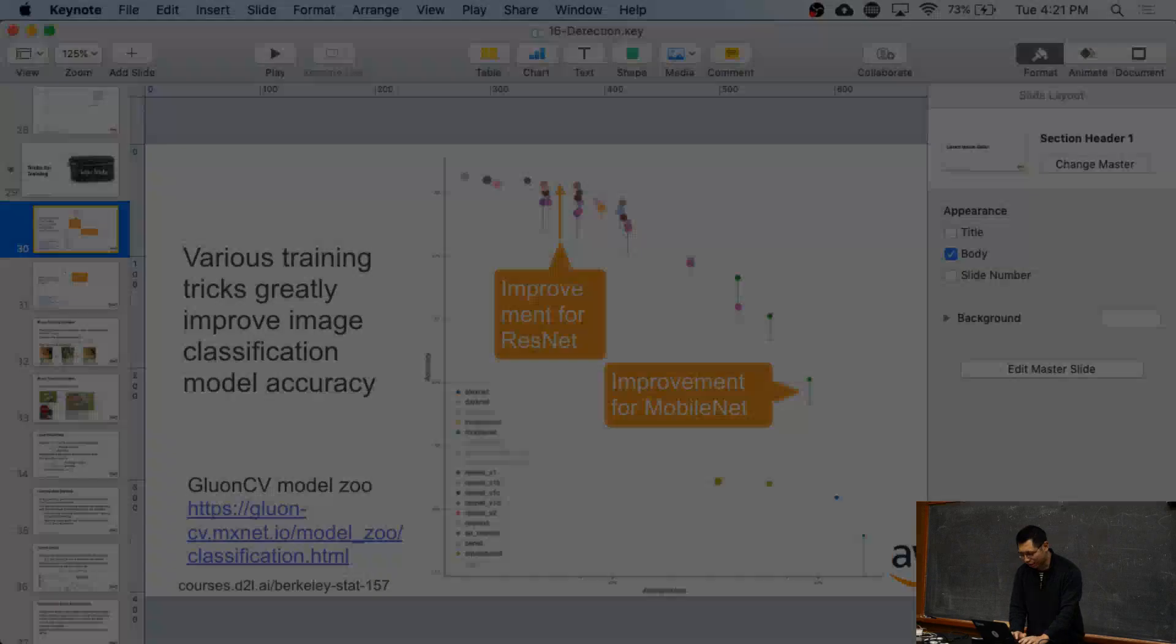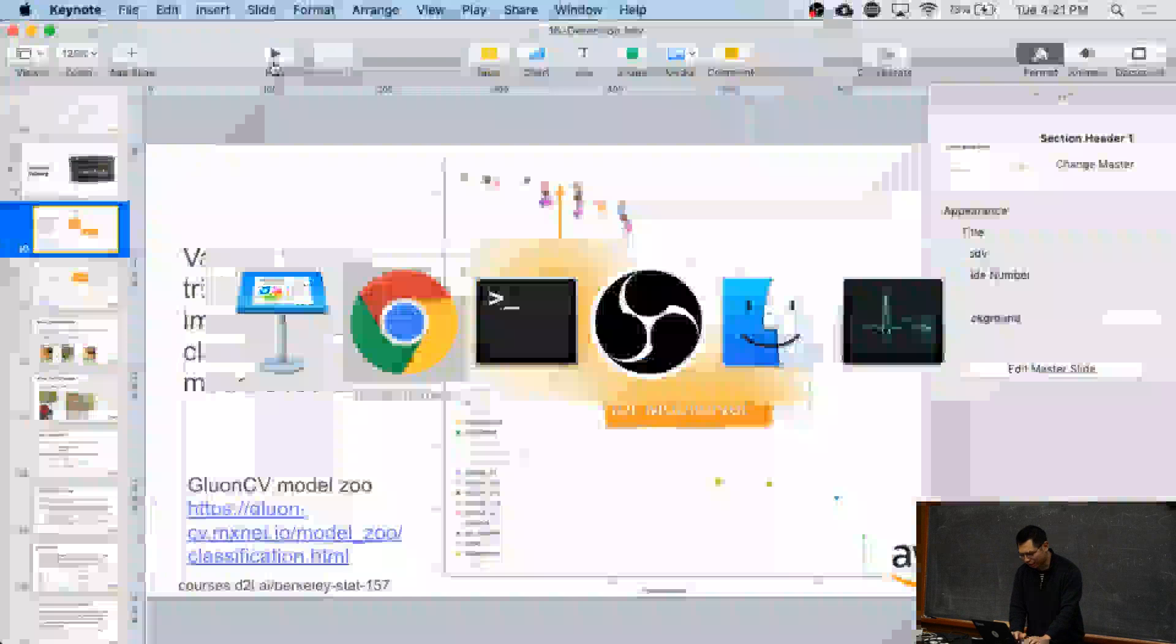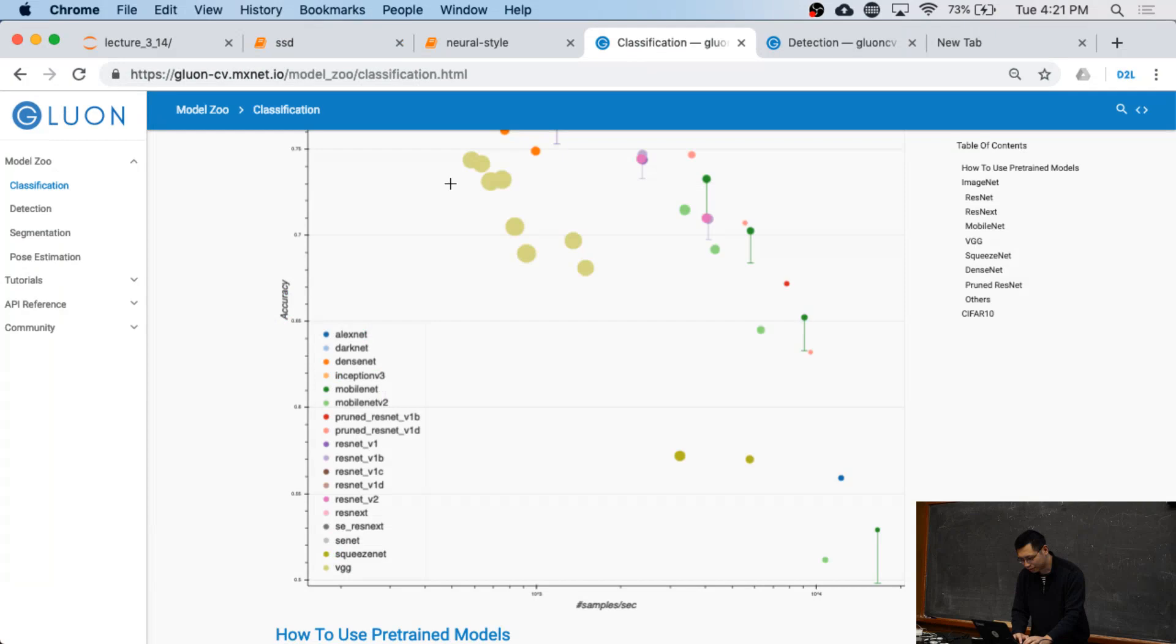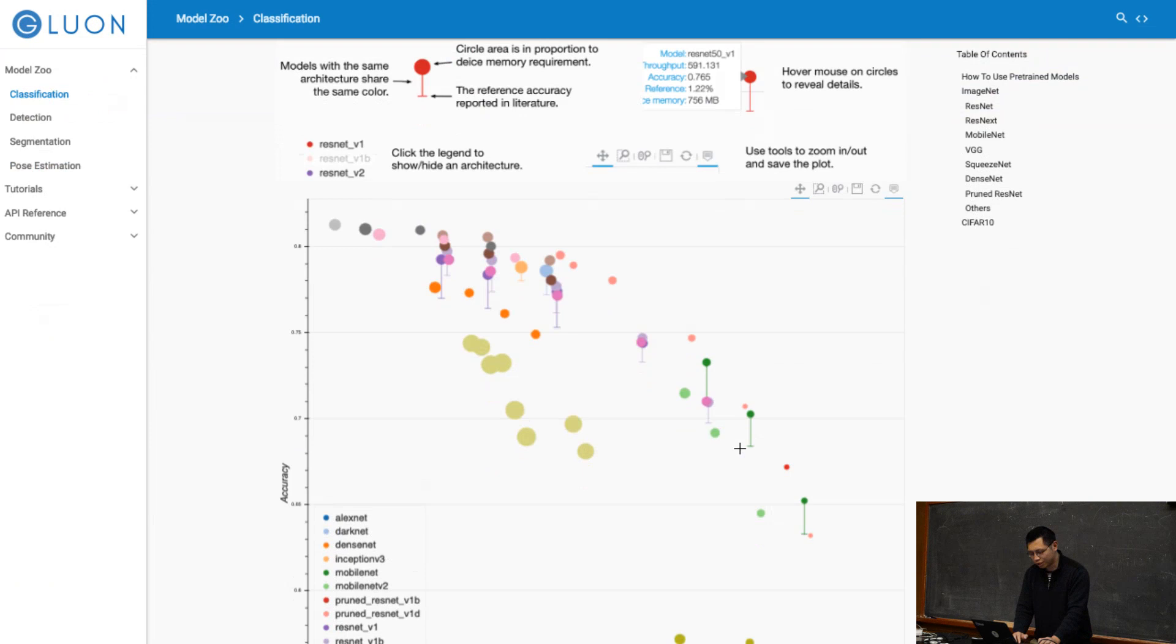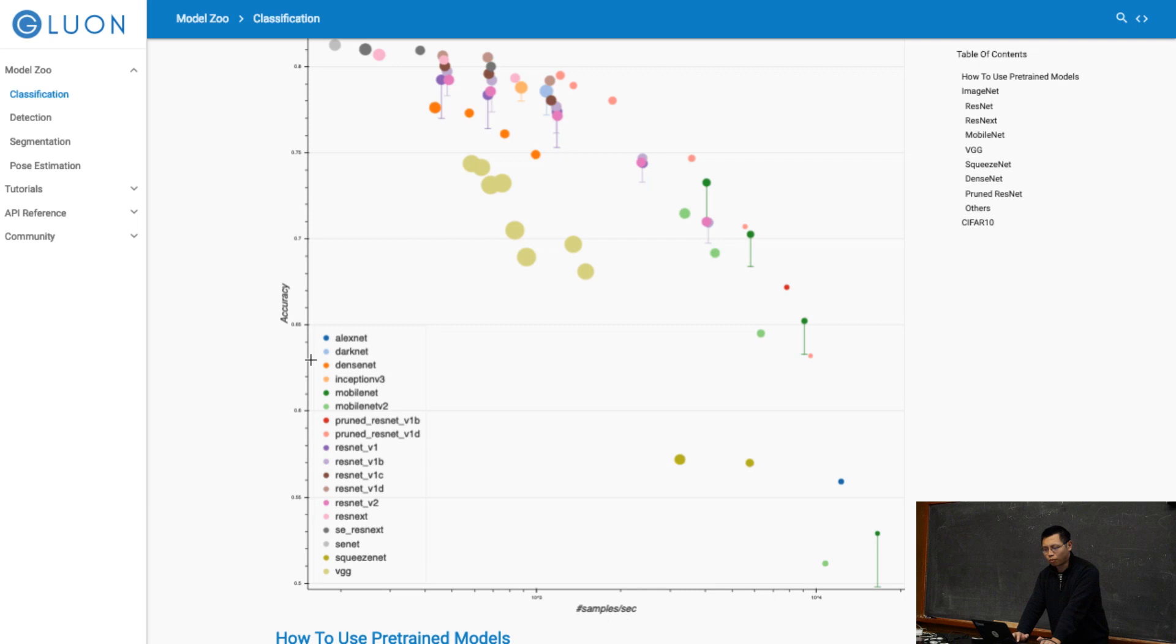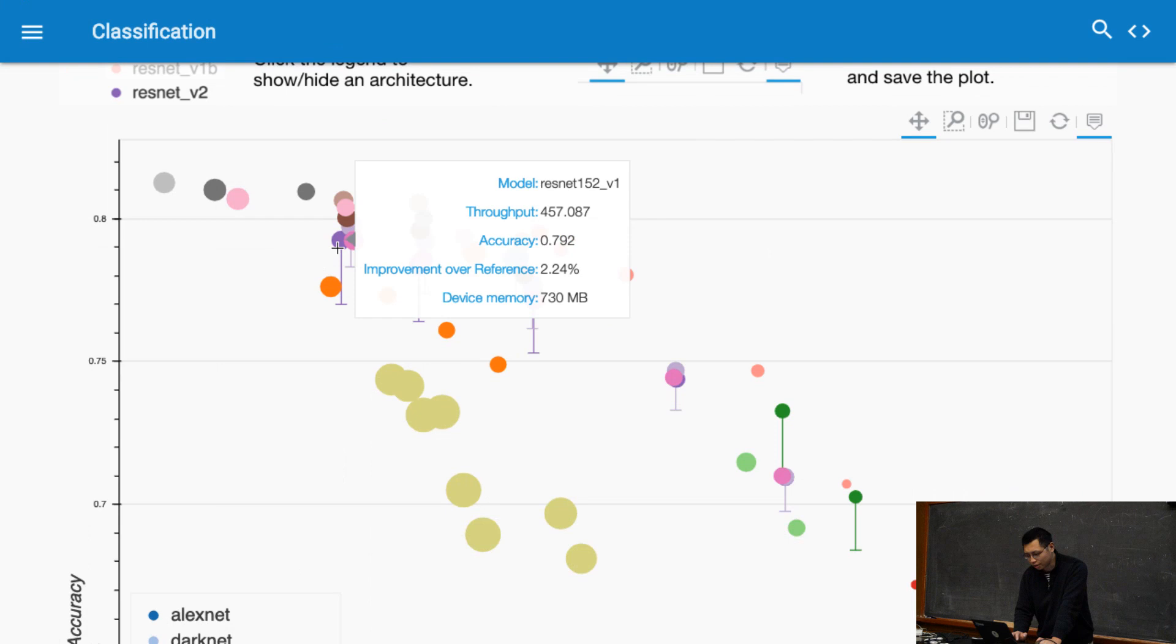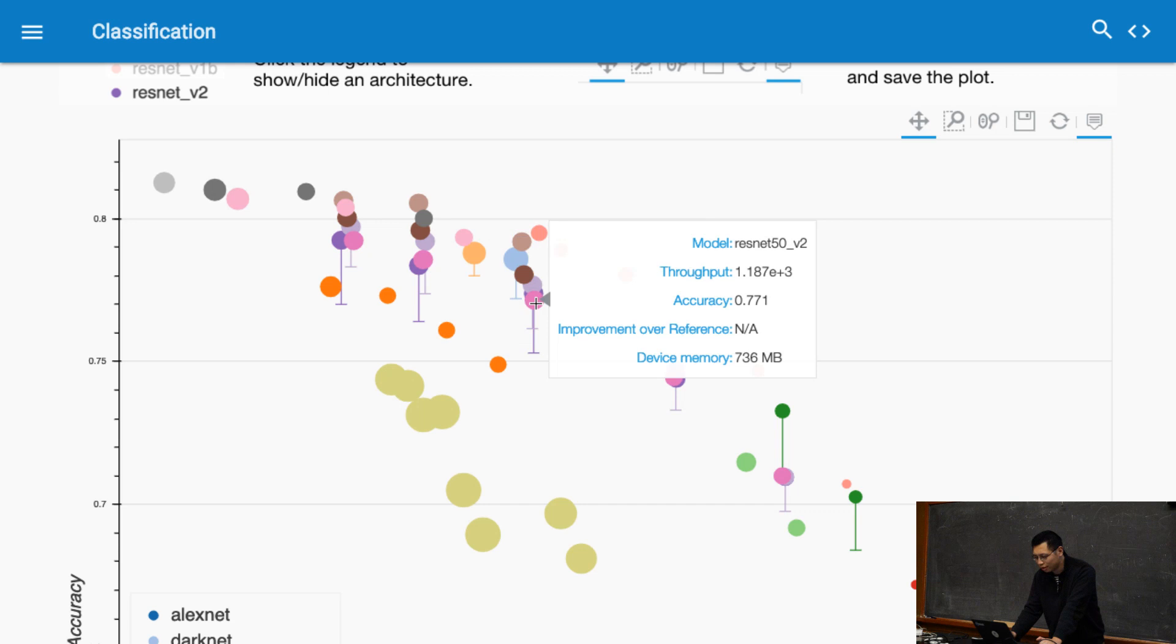Okay, for example, so this is the model zoo I just opened. Let me just open the model zoo here. So this is the model zoo we have. Still, like, the x is the throughput, the y is the accuracy, this is for image classification. So you can see everything.